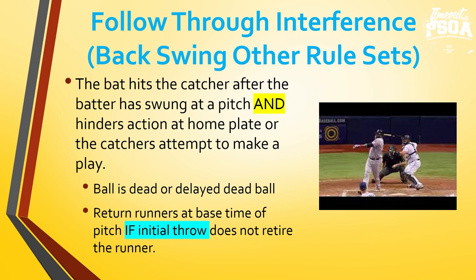Follow through interference in federation is when the batter hits the catcher after swinging at a pitch and that batter hinders the catcher's action at home plate or their attempt to make a play. The ball is dead or delayed dead ball. If the catcher gets knocked out, call time immediately. If the catcher is not able to hold or get to the ball, call time. But we're going to see in video that the catcher can actually play through the follow through interference and retire a runner on a stolen base — that's a delayed dead ball, and since the initial throw retired the runner, we ignore the follow through interference.